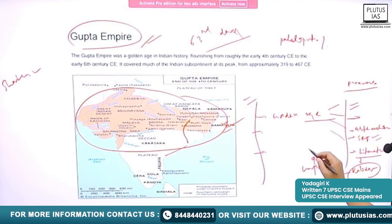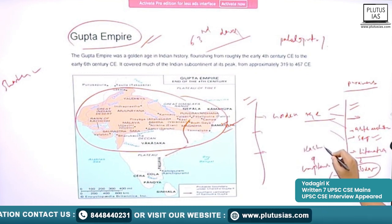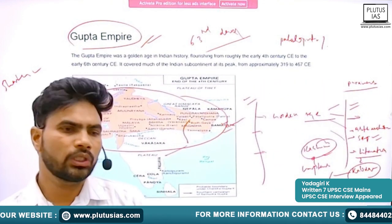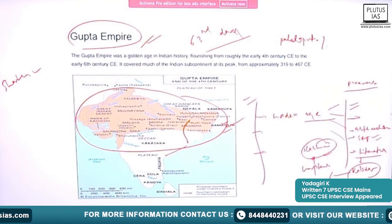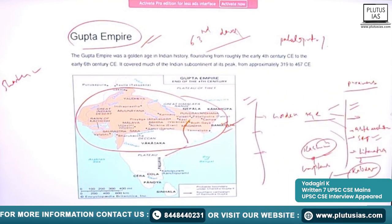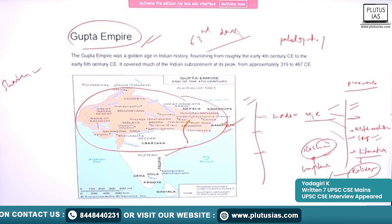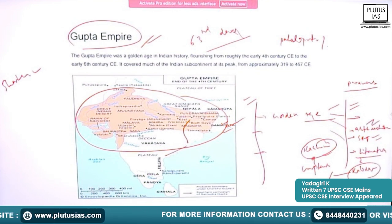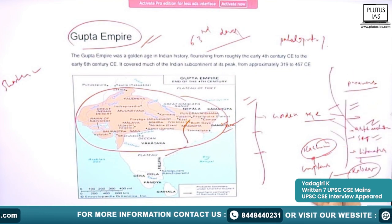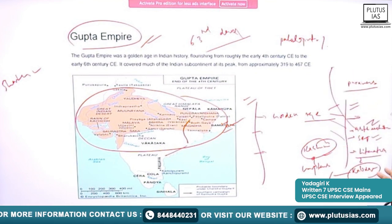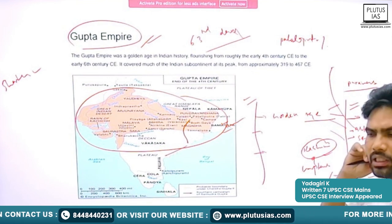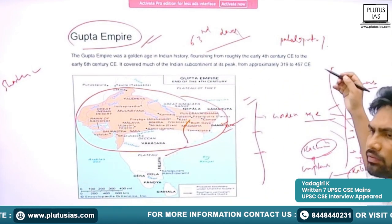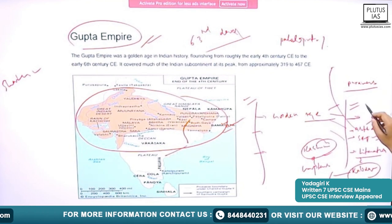Kalidasa is associated with the Guptans and most probably hailed from the Kashmir region of India. He is considered one of the greatest playwrights not only in India but across the world. There was flourishing in each and every aspect including administration, where they provided a centralized and efficient administrative system.